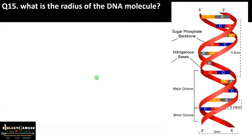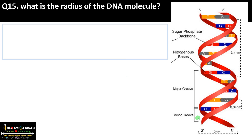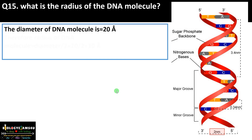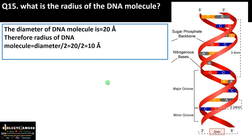The final question: what is the radius of the DNA molecule? The diameter of the DNA molecule is 2 nanometers, that is 20 angstroms. Therefore the radius is diameter divided by 2, that is 20 divided by 2 = 10 angstroms.